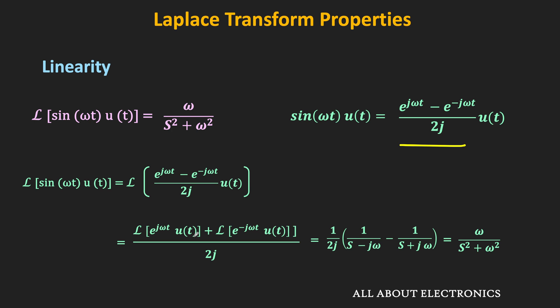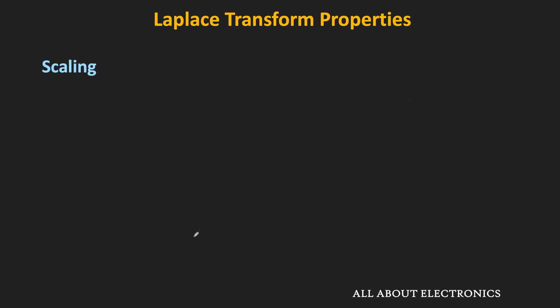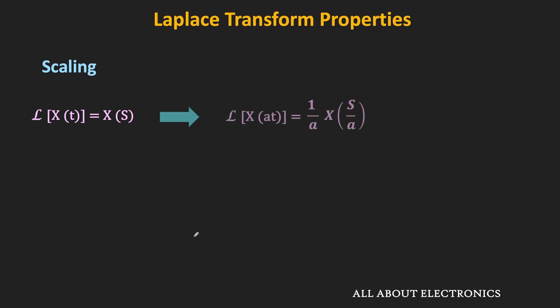After algebraic manipulation, we get w divided by s squared plus w squared. That is the linearity property of the Laplace transform. Now let us see the scaling property. If the Laplace transform of x(t) is X(s), then as per this property, the Laplace transform of x(at) equals 1/a times X(s/a), where a is a positive constant greater than 0.